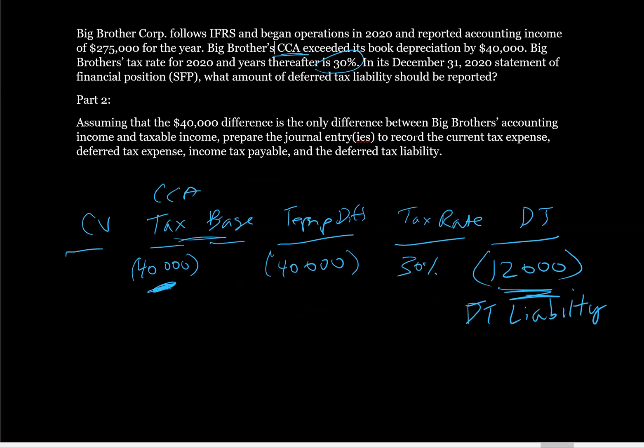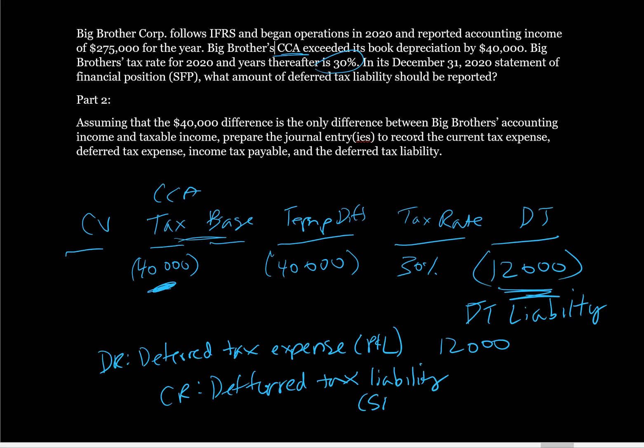Let's do the journal entry for the deferred tax liability. So we would debit deferred tax expense, which is a P&L account, goes through our income statement, and this is going to be for $12,000. And then credit deferred tax liability. This is going to be statement of financial position, and this is going to be $12,000. And remember, IFRS requires this account to be non-current. So that's part one. Let's take a look at part two.